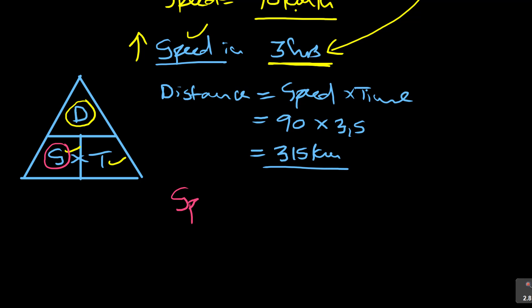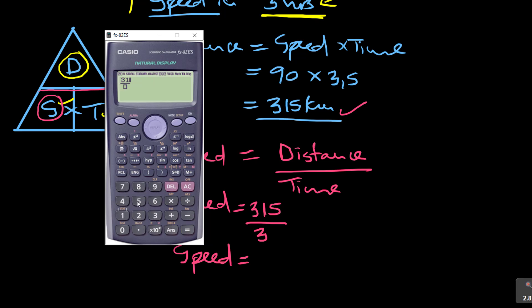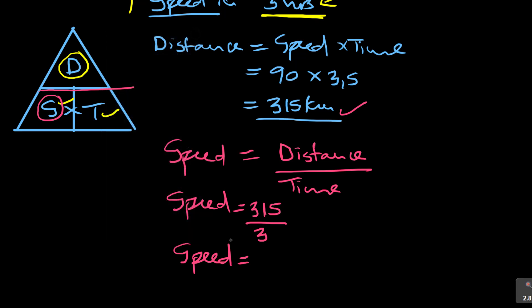So what is the speed? We are looking for S. Speed is equal to distance over time. The distance never changed. He's still traveling the same distance, which is 315 over the time. They say it is going to take less time, which is three hours, so 315 over 3. We now find the speed. We'll use the calculator here: 315 over 3, which is equal to 105.